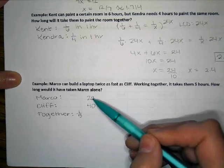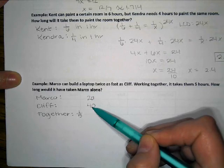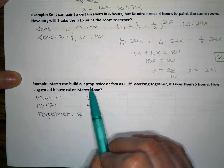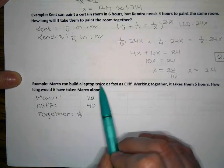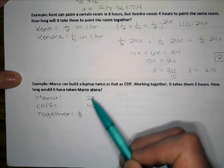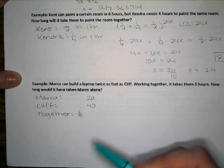That means that here, Cliff is the one that's going to be double Marco's time. Even though it says Marco can build the laptop twice as fast, even though the two is kind of applying to Marco, the two is going to go with the variable for Cliff, and that usually throws students off.